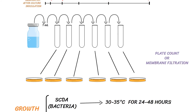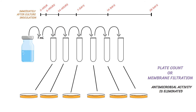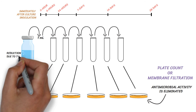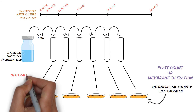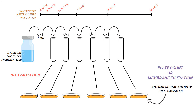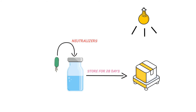Ensure that any antimicrobial activity of the product is eliminated by dilution or by adding specific neutralizers in the medium used for the recovery of survived microorganisms. The method should be able to demonstrate the reduction in microbial count due to the preservatives. Remember that the neutralization of preservatives is important at the time of enumeration of the microbial count at each time point. Neutralizers should not be added at the time of culture inoculation in the product.